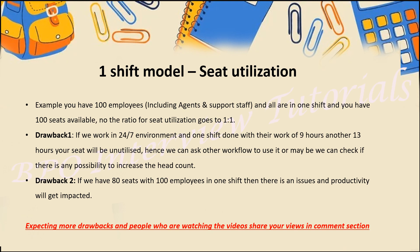Let's consider we have 100 employees — including all agents, support staff, and everyone — and we have 100 seats available. In a one-shift model, everyone gets an exact seat: a one-to-one ratio. Now what drawbacks may we get? If we are working a 24x7 model, for the first nine hours the seats are utilized perfectly. What about the remaining 13 hours? Those seats will be unutilized.